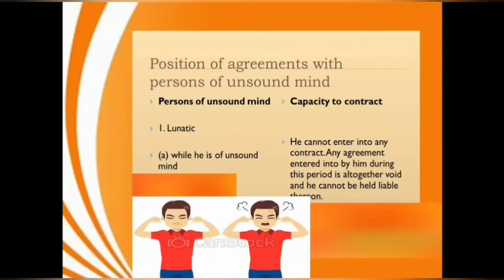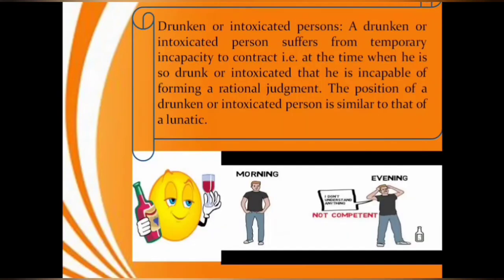A lunatic is a person who is mentally deranged due to some mental strain or personal experience. He suffers from intermittent intervals of sanity and insanity, and he can enter into contracts during the period when he is of sound mind. The law puts a drunk person on the same pedestal as that of an incompetent person, since it is presumed that the drunk party may have been incapable of understanding what he or she is agreeing to. A contract made by a person while he is so drunk as to be incapable of understanding its nature is not valid.